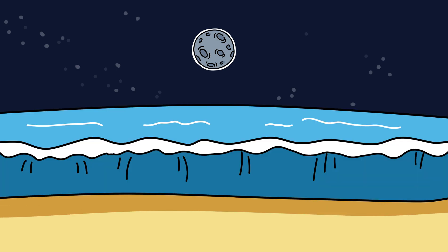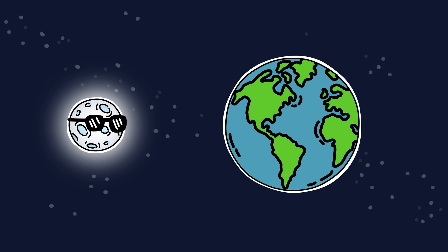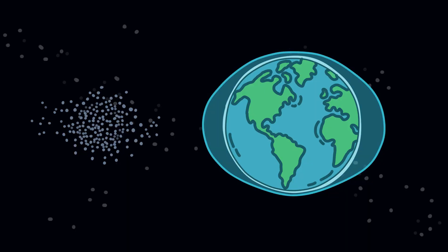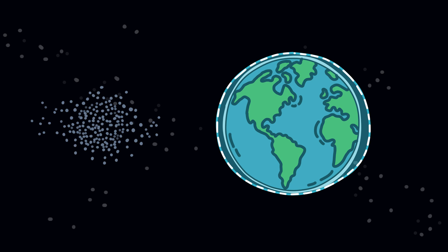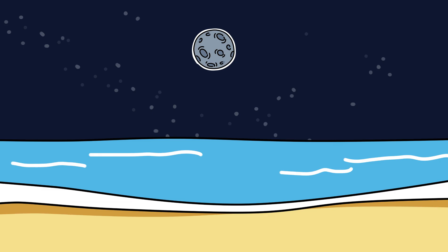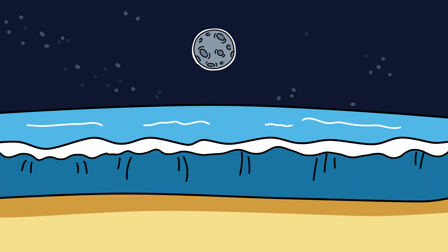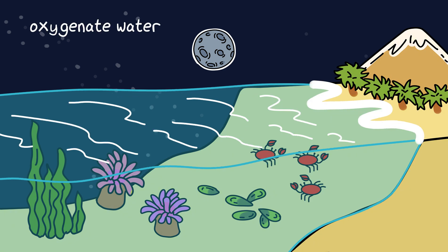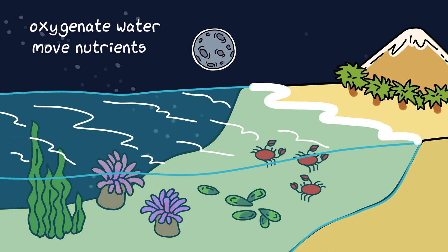Now let's talk about tides. The moon is basically the boss of Earth's tides. Without it, tides would shrink by like 75%. Tides do more than splash beaches. They fuel life. They oxygenate water, move nutrients, and clean coasts.